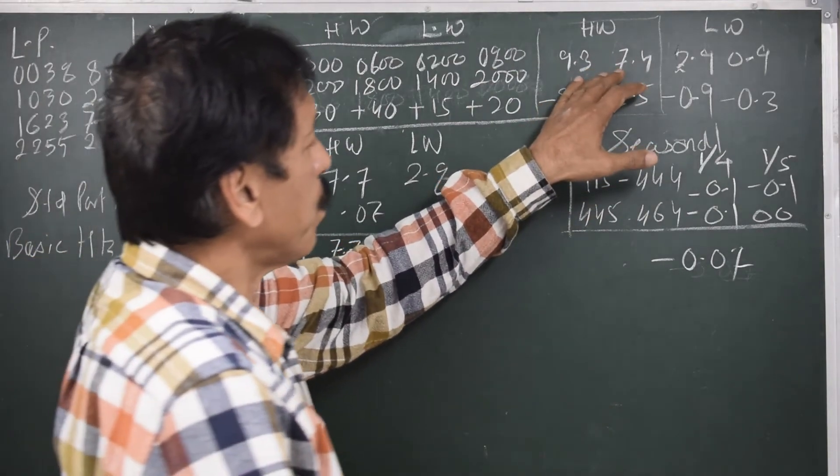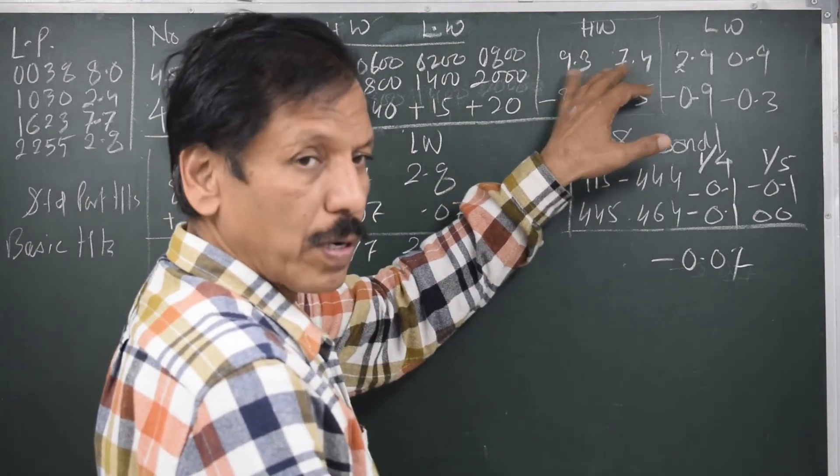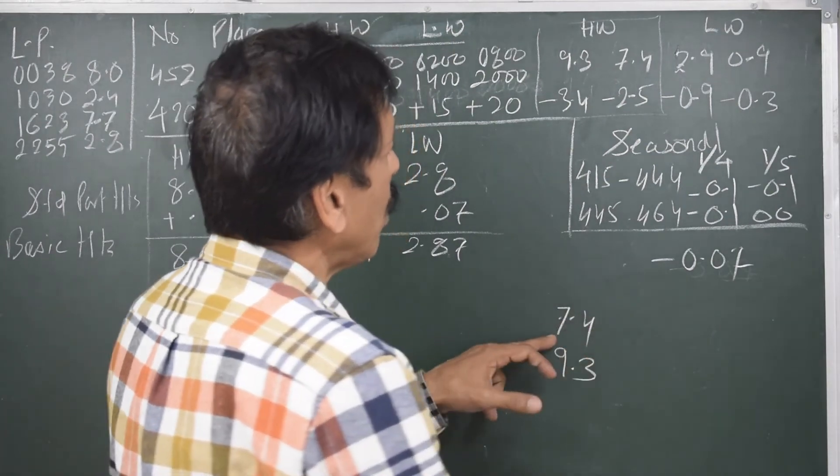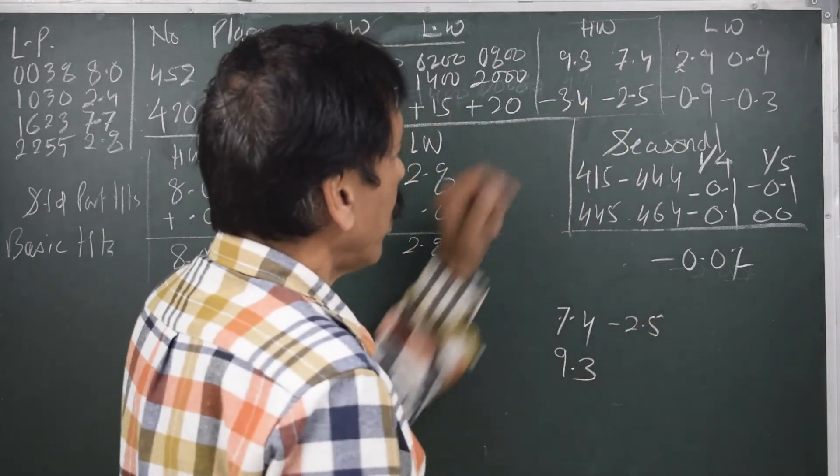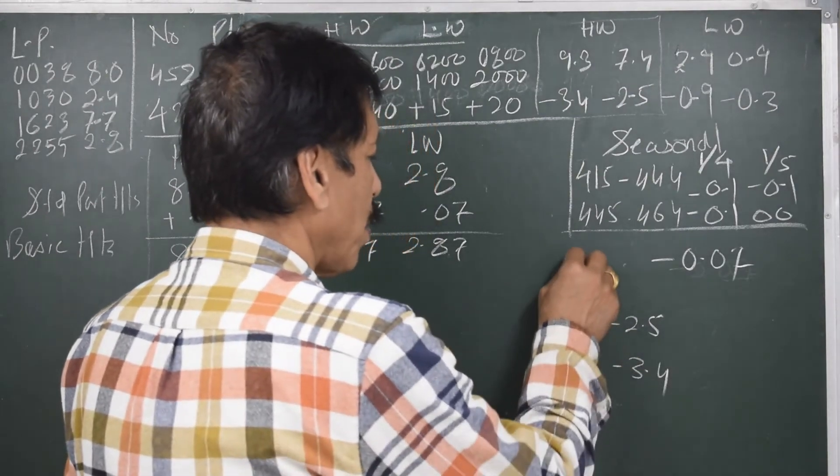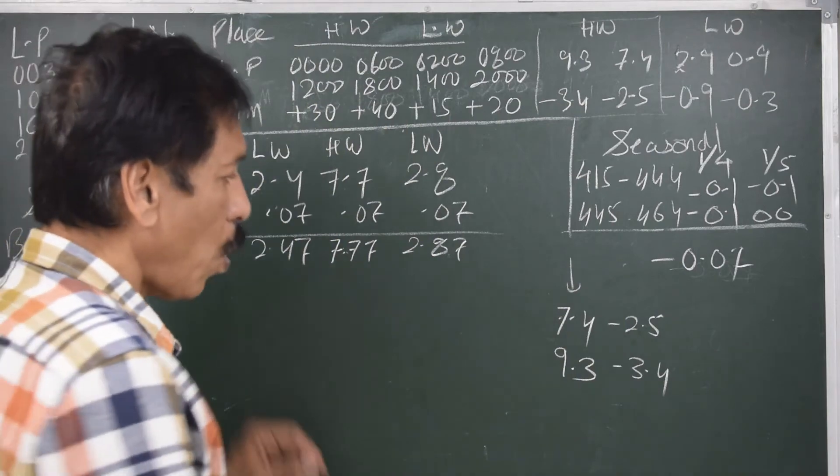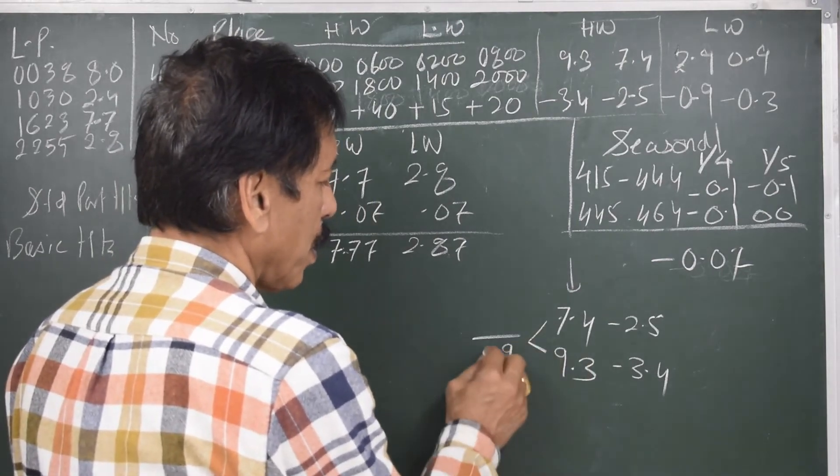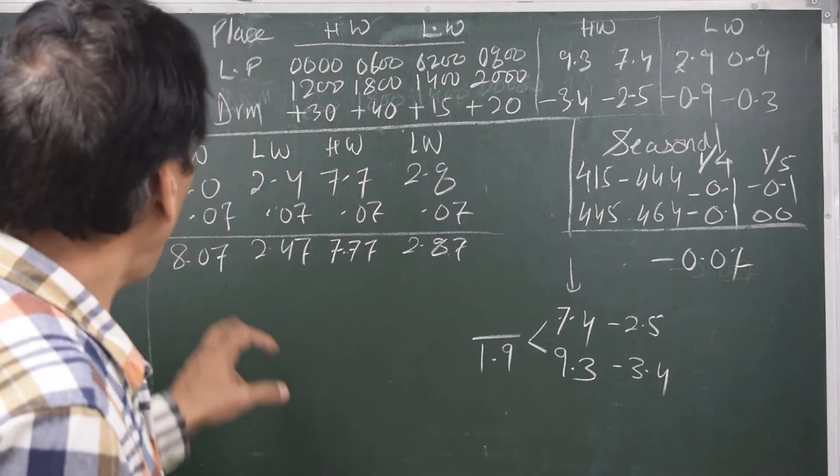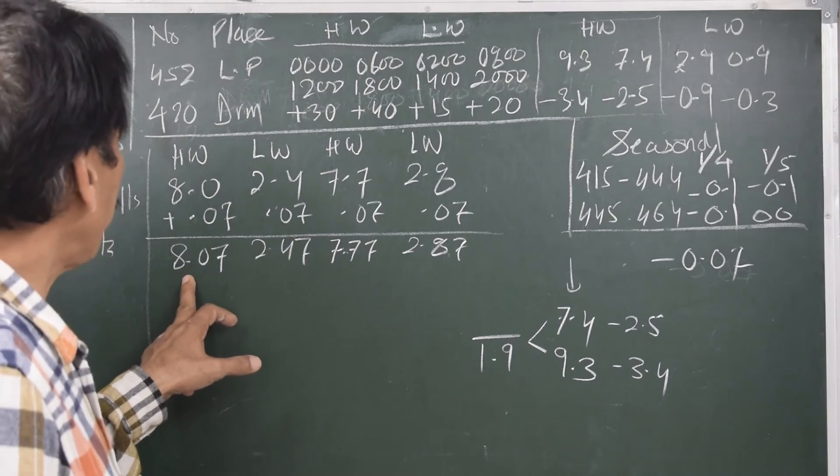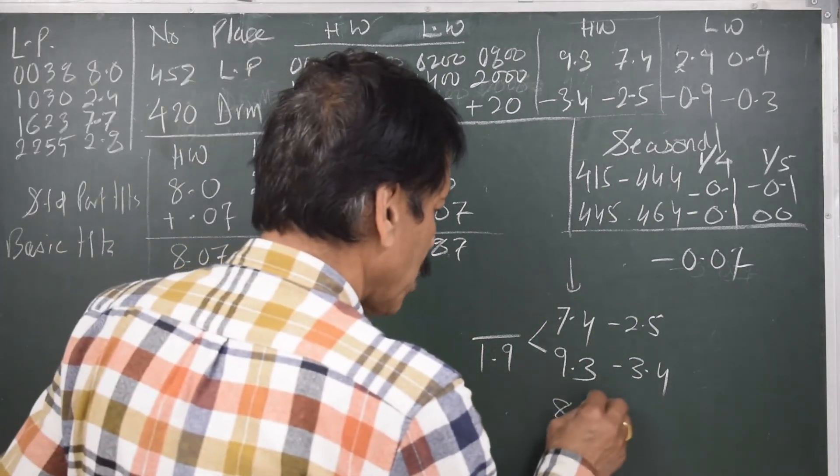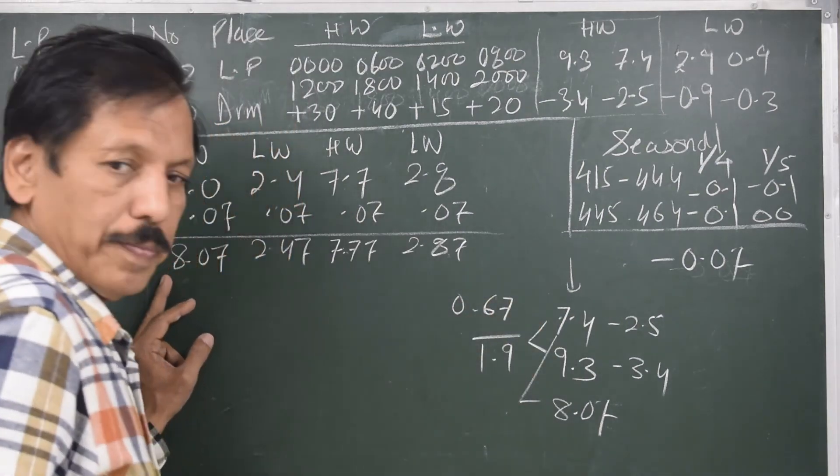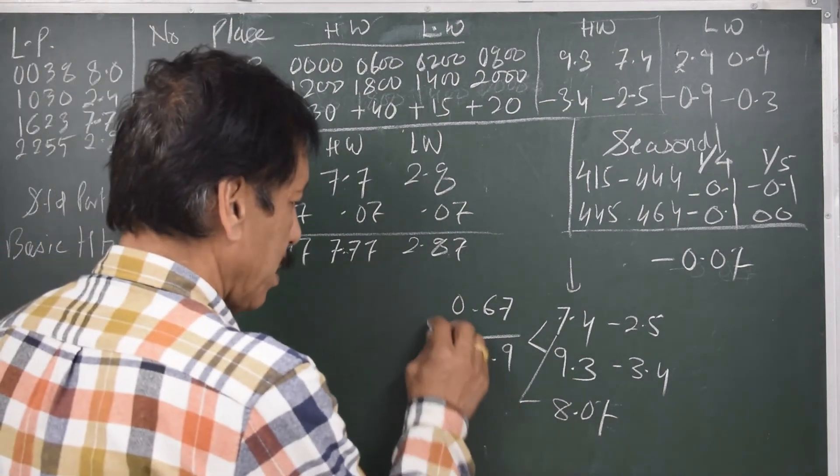What I do is I write the values which are given for the standard port, that is mean high water neaps and mean high water spring, in increasing order. Say 7.4 and then 9.3. For 7.4 the correction is minus 2.5, and for 9.3 the correction is minus 3.4. What is important is I write the standard port values in increasing order. What is the difference between this? The difference between them I write in denominator, the difference between them is 1.9. Now I want to find out what is the relevant correction for 8.07. Now 8.07 I write here, and what is the difference between 8.07 and 7.4 I will write it here, 0.67. Now 0.67 upon 1.9 will give you a factor. This is called factor.